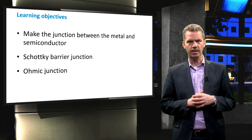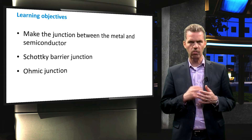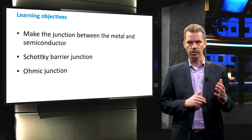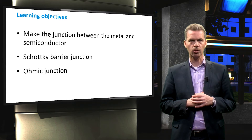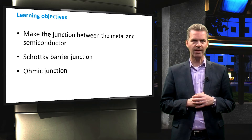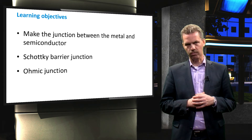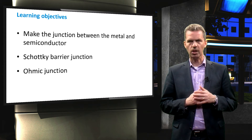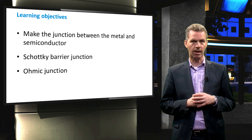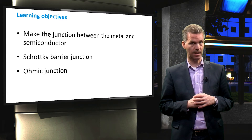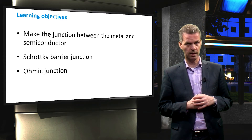In this video we will see two types of metal-semiconductor junctions: a so-called Schottky-barrier junction and an Ohmic junction. We will not deal yet with the current flow, but focus only on the band diagrams that will illustrate this junction. So be prepared to see many band diagrams today.